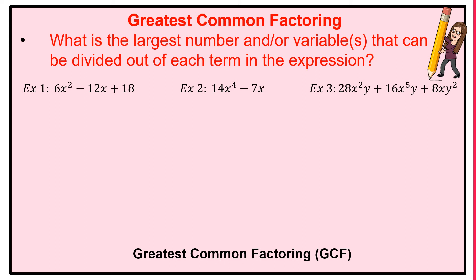What is the largest number and/or variables that can be divided out of each term in the expression? So keep in mind, we're going to be dividing on a number, the largest possible number, not just any number. We're going to divide out possibly one variable, two variables, possibly squared, cubed variables. So we're really going to amp it up with the amount of information in that GCF.